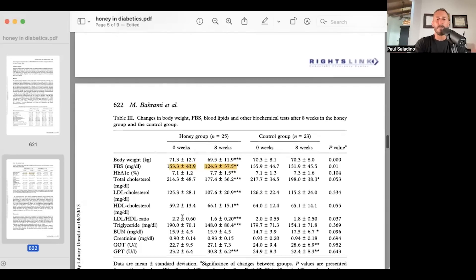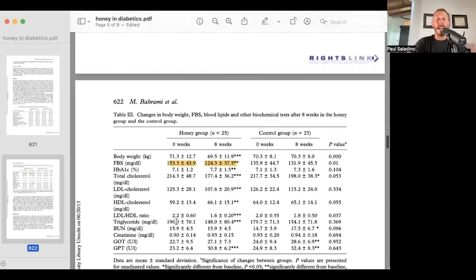You can see here on these blood work results, the triglycerides went from 190 to 148 in the honey group. The HDL went from 59 to 66. The LDL went from 125 to 107. So all of these metrics got better in the honey group in diabetics.